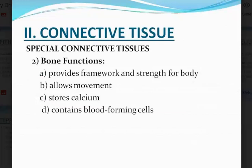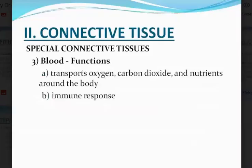Bone is also a special type of connective tissue. Bone provides framework and strength for the body, allows movements, stores calcium, and contains blood-forming cells. Blood is also a special connective tissue. Its functions include transportation of oxygen, carbon dioxide, and nutrients around the body. It is also involved in the immune response — white blood cells including lymphocytes, neutrophils, eosinophils, and monocytes all fight infection, while red blood cells transport oxygen in the blood.